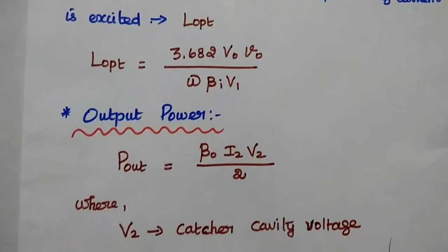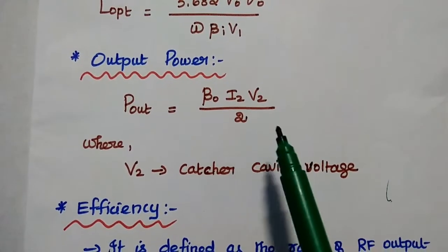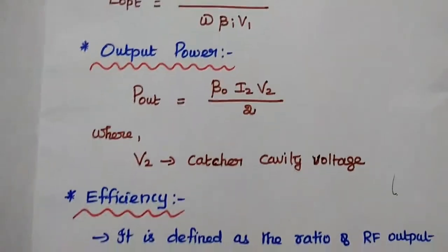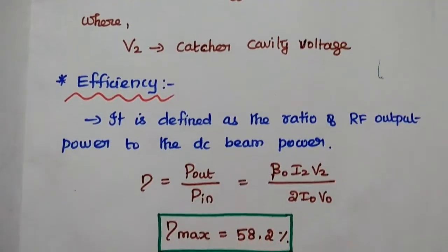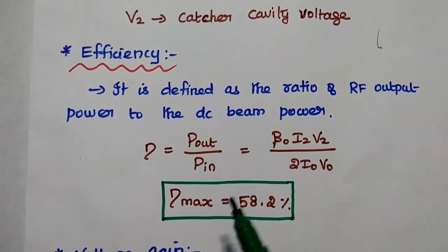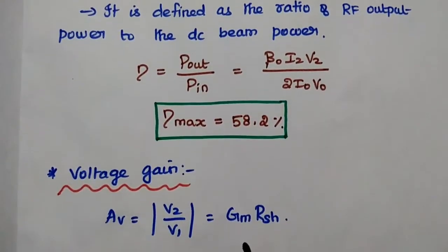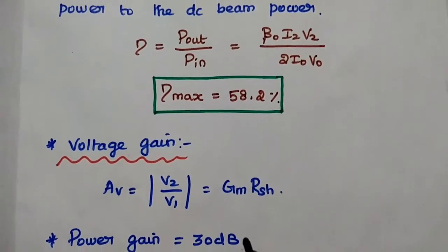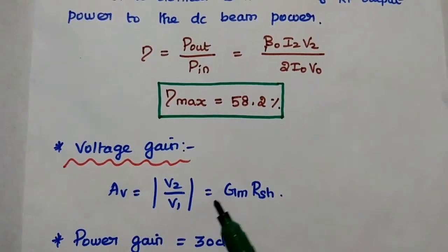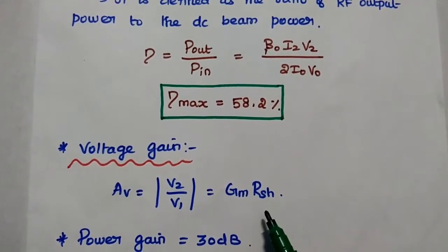The output power of the klystron amplifier is P_out = β₀ I₂ V₂ / 2, where V₂ is the catcher cavity voltage and I₂ is the bunched beam AC current. The efficiency is the ratio of RF output power to DC input beam power: η = P_out/P_in = β₀ I₂ V₂ / (2 I₀ V₀). The maximum efficiency is 58.2% for this klystron amplifier. The voltage gain A_V = output voltage / input voltage = G_m × R_sh, where G_m is the maximum conductance of the cavity and R_sh is the shunt equivalent resistance of the output cavity.